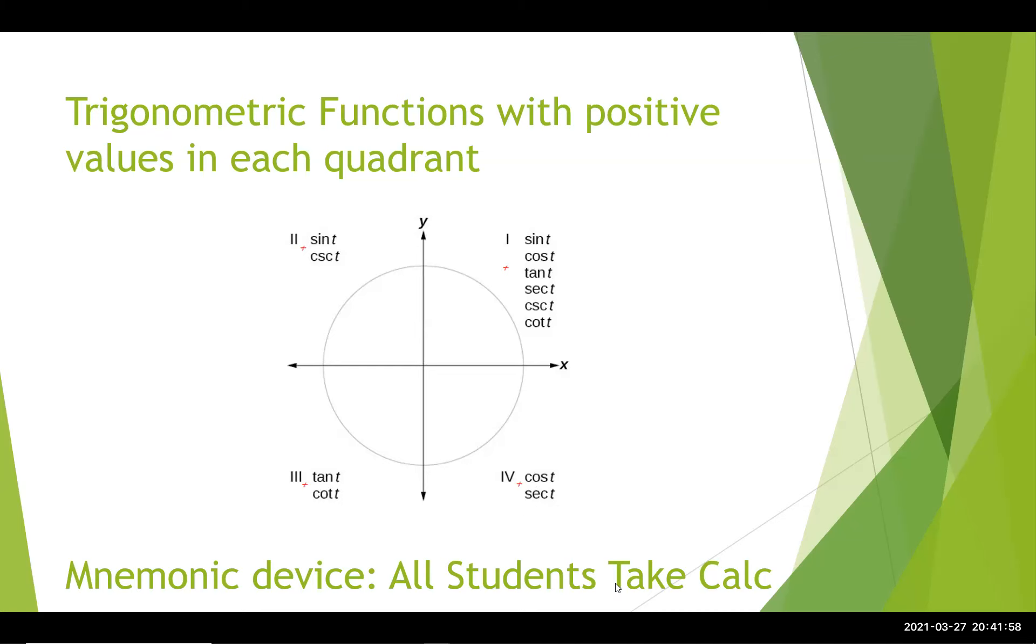Here's a mnemonic device: All Students Take Calculus. All, meaning in quadrant 1, everything is positive. Students for quadrant 2 means sine and its reciprocal are positive. In quadrant 3, T for tangent, tangent and its reciprocal are positive. And in quadrant 4, C for cosine.